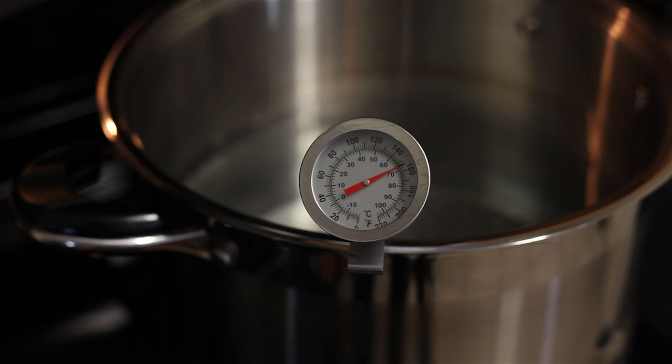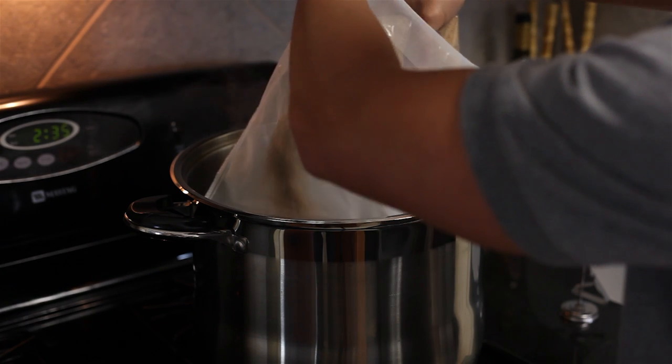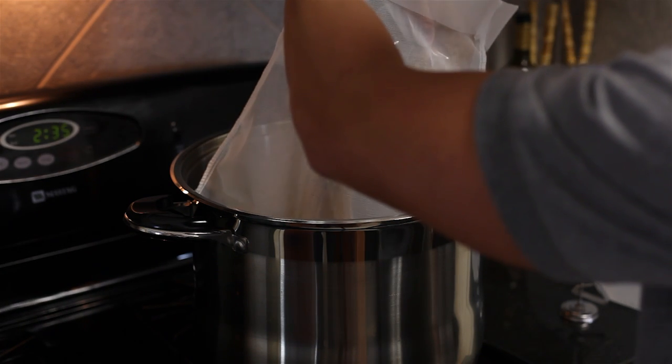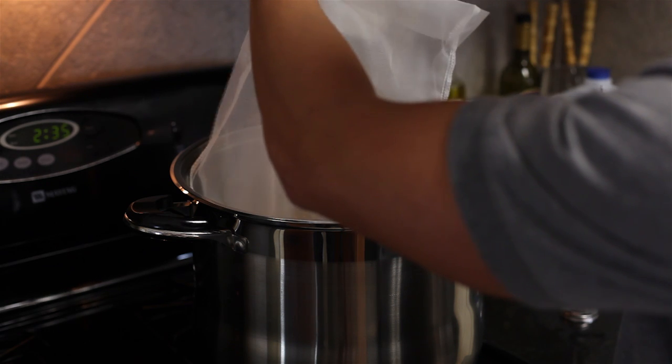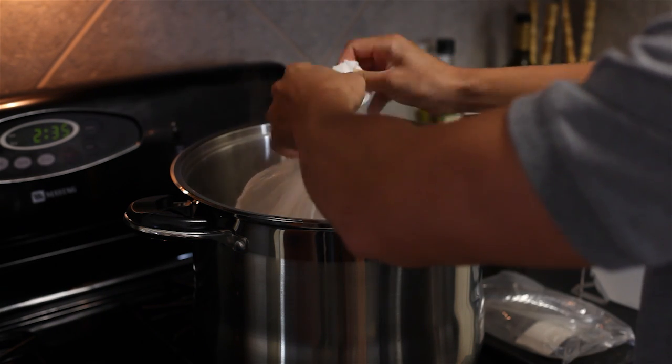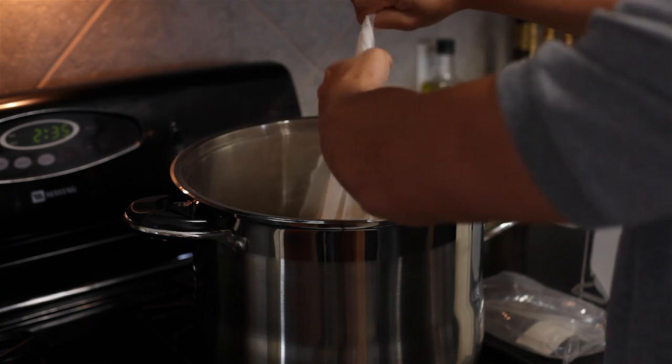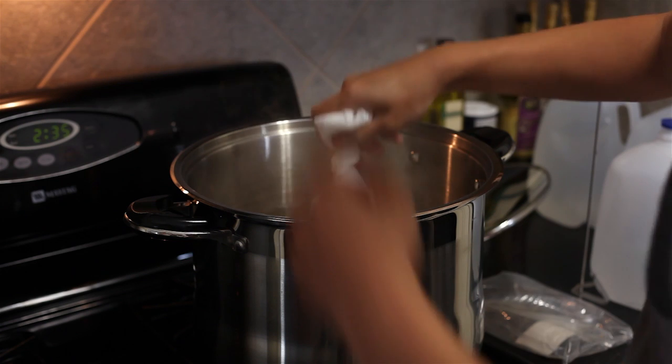First, bring the water to 155 degrees Fahrenheit. Once you have hit temperature, line the inside of the brew pot with a mesh bag. Then carefully pour the grain into the mesh bag while making sure that the bag does not fall into the pot. After all the grain is in the bag, tie it shut. Make sure the knot is tight enough that it won't come undone, but loose enough so you can undo it later.